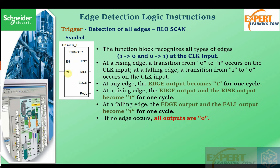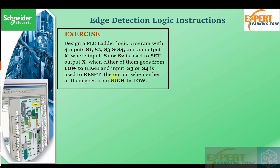A one-to-zero transition on the clock pin will trigger the edge and falling output to become one for one clock cycle, whereas a zero-to-one transition at the clock input will trigger the edge and rising output to become one for one clock cycle. If no edges are detected, all outputs are zero.